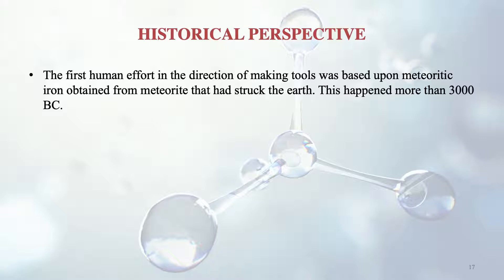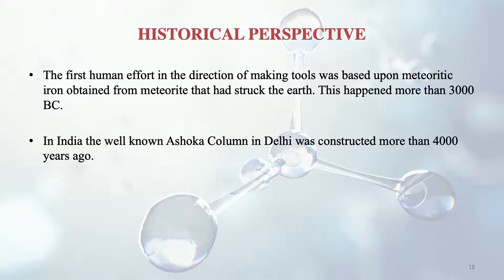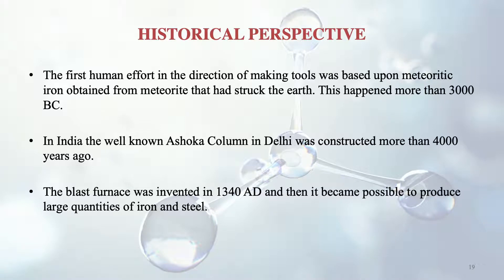From a historical perspective, the first human effort in making tools was based upon meteoritic iron obtained from meteorites that struck the earth, which happened around 3000 BC. In India, the well-known Ashoka column in Delhi was constructed about 4000 years ago and is an example of ferrous material. The blast furnace, through which iron is produced, was invented in 1340 AD, making it possible to produce large quantities of iron and steel.